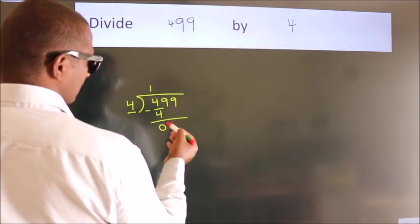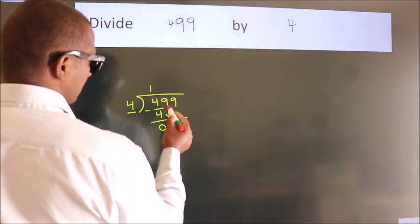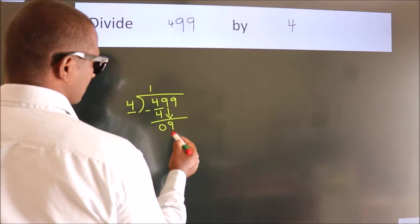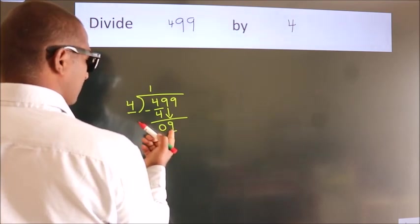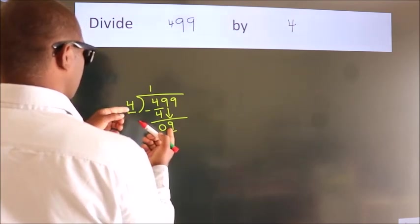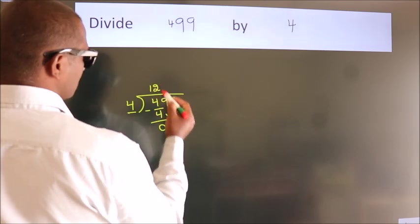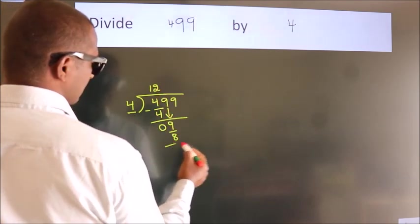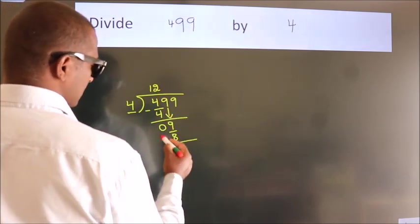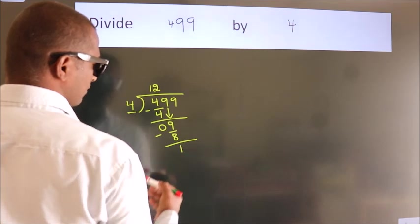After this, bring down the beside number, so 9 down, so 9. A number close to 9 in 4 table is 4 times 2, which is 8. Now we subtract, we get 1.